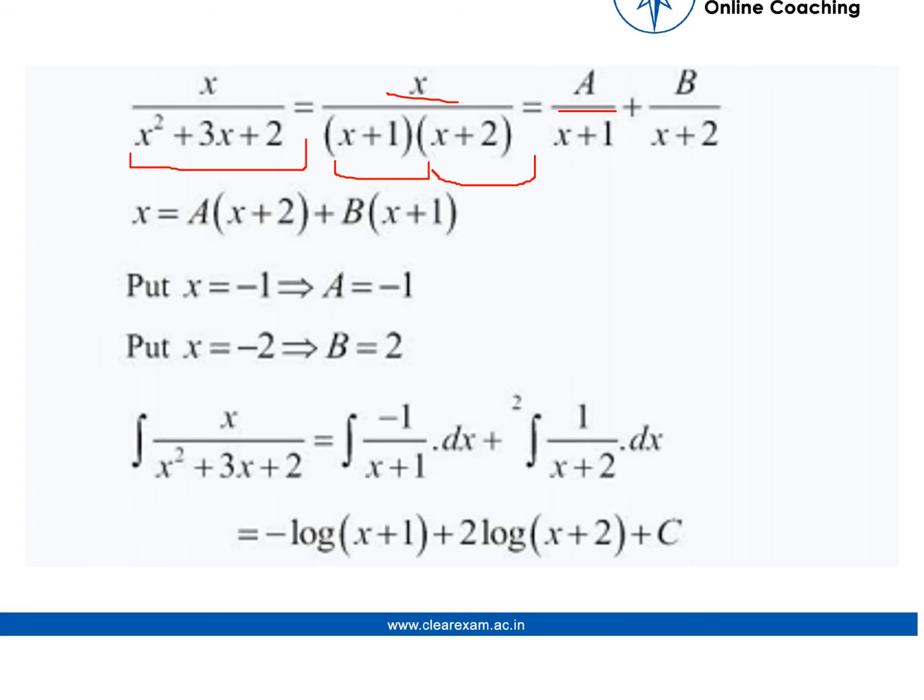If we take x plus 1 and x plus 2 as denominators and we take a random variable A and B upon it, we know if we cross multiply this, it should be equal to x.